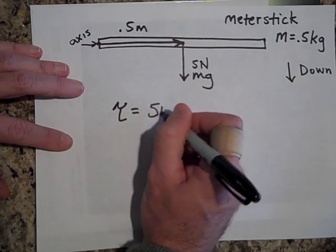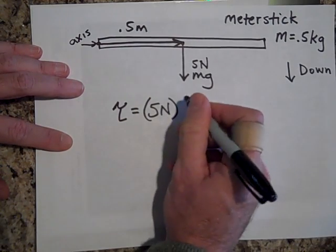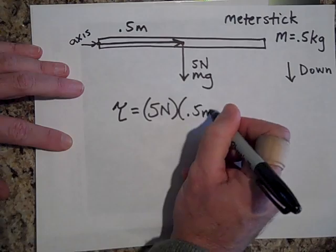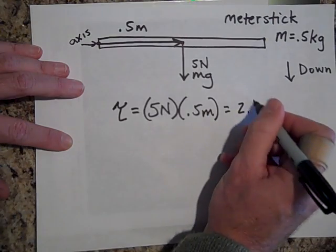So you take all of the five newtons times a half a meter. So that's two and a half newton meters.